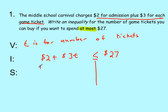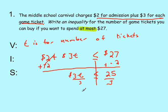Now we just have to solve it. So to solve it, we are going to add negative 2 to both sides, cancel out that term. And we are left with 3T is less than or equal to 25. And then we are going to divide by 3.